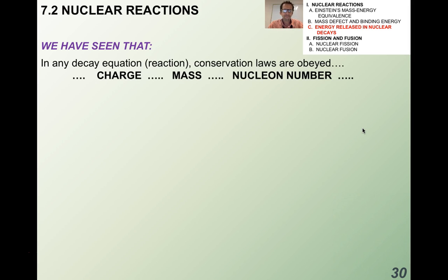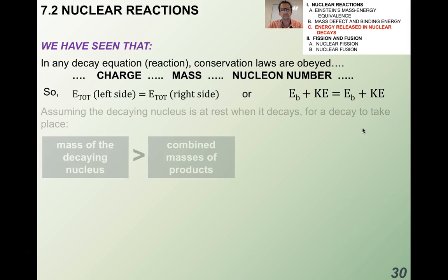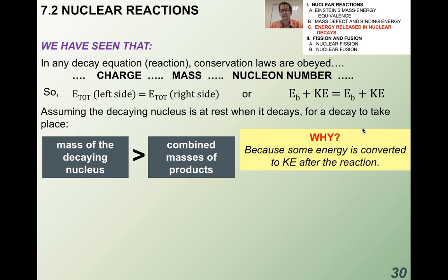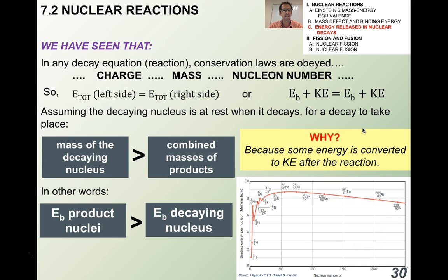In any decay equation, conservation laws are obeyed: conservation of charge, mass, nucleon number, and of course energy. Assuming the decaying nucleus is at rest, for a decay to take place the mass of the decaying nucleus must be greater than the combined masses of the products, because some energy is converted to kinetic energy after the reaction. In other words, the binding energy of the product nuclei must be greater than the binding energy of the decaying nucleus.